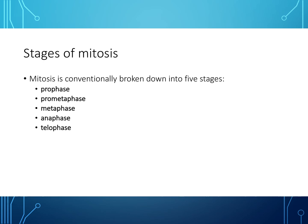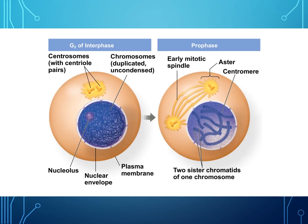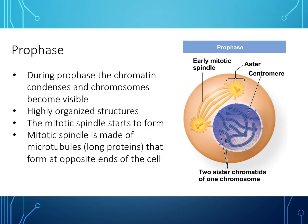The stages of mitosis — a useful anagram to remember them is: 'Please Make Me A T' — Prophase, pro-Metaphase, Metaphase, Anaphase, Telophase. During prophase, you can see the early mitotic spindle forming, the centromere, and the two sister chromatids of each chromosome, compared to the G2 of interphase on the left-hand side.